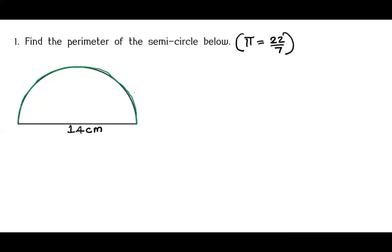You can see that this is a part of a circle. The distance around the whole circle is 2πr. But since this is half of a circle, it will be one half of 2πr, or the circumference of a whole circle divided by 2.